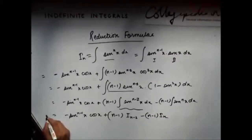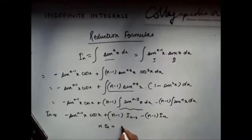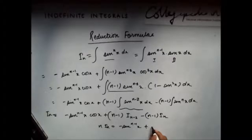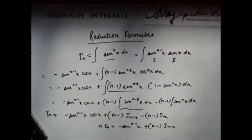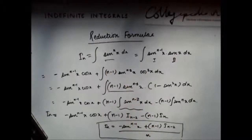So if I put I_n on this side, I will get n·I_n equals minus sin^(n−1)(x)cos(x) plus (n−1)·I_(n−2). So my I_n becomes this whole expression divided by n. This is the reduction formula for the integral of sin^n(x) dx.